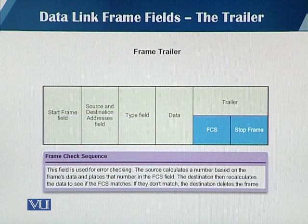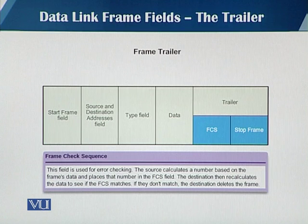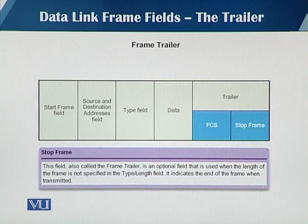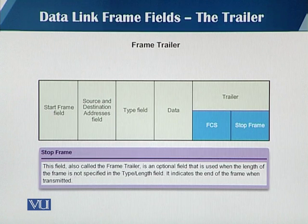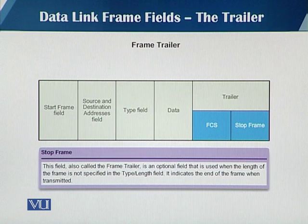The trailer is the last part of a data link frame and has two subfields. The first is the FCS, which stands for Frame Check Sequence, and is used for error checking. The second subfield is the stop frame, which tells the receiver that the frame is about to end — it is an optional field that some protocols use.